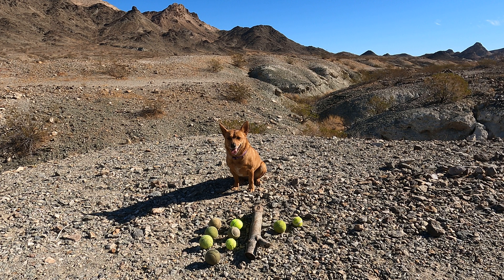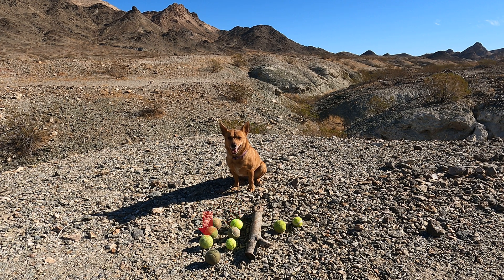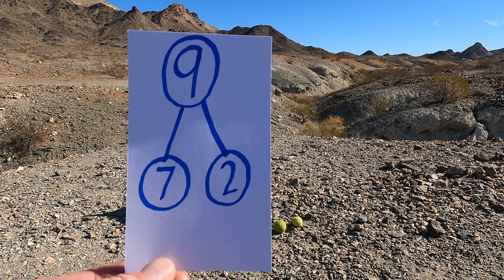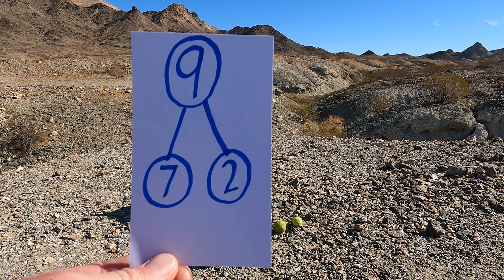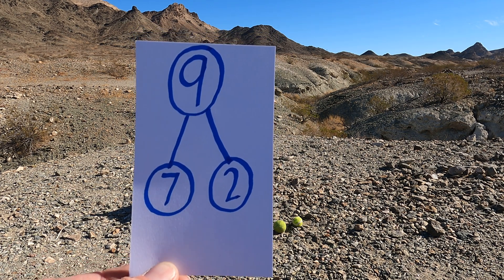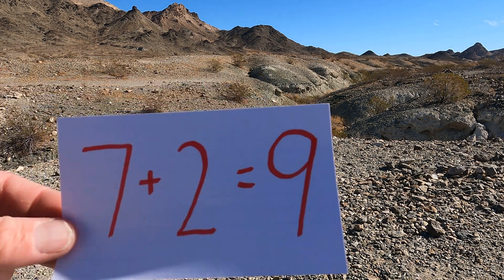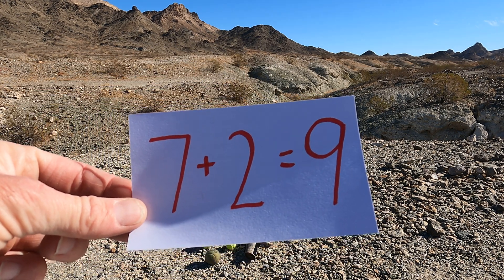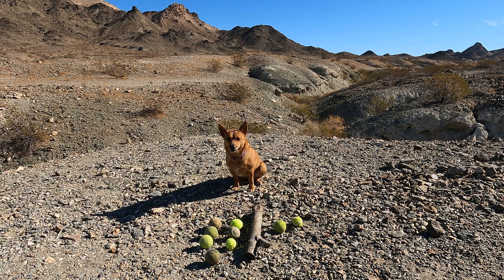Who moved the tennis balls? Oh well, we could still use it to show a way to make nine! Check it out — there are one, two, three, four, five, six, seven — seven tennis balls on one side and two tennis balls on the other. Seven tennis balls and two tennis balls makes nine tennis balls. Seven plus two equals nine.